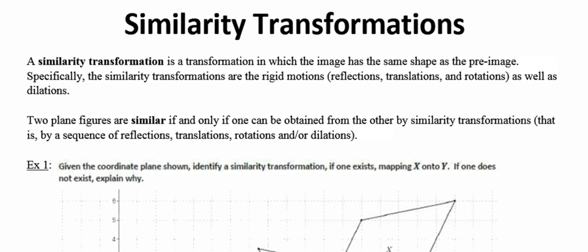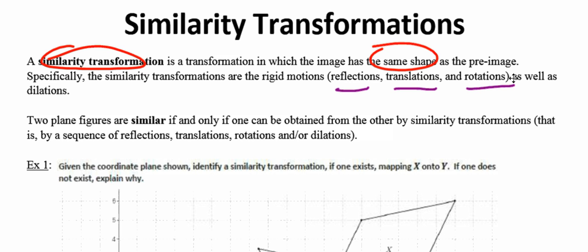So first of all, what is a similarity transformation? A similarity transformation is just any transformation that will produce an image that is the same shape as the original figure. Since reflections, translations, and rotations produce a figure which is congruent to the original, they would all have to have the same shape and therefore be similarity transformations. Dilation produces an image that is the same shape as the original but not necessarily the same size, making it a similarity transformation as well.